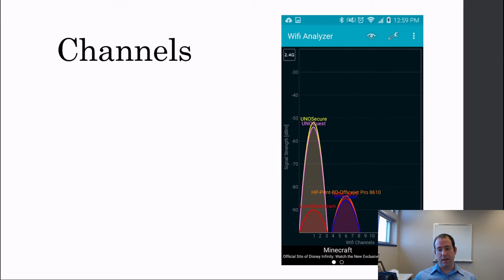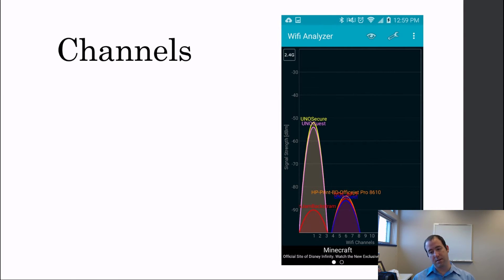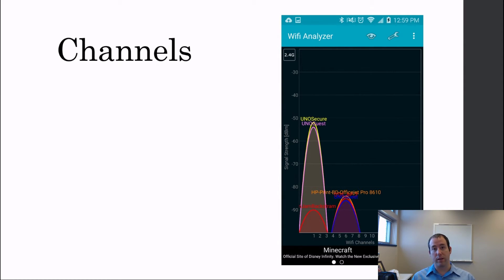Here's an example of a WiFi analyzer — Android has these available. Looking at a screenshot from my office, UNO Secure and UNO Guest are on channel 1, a few others are on channel 6, and nothing is on channel 11. You can pull out an analyzer and see which channel is most open or least congested in your area, and you probably want to have your radio on that channel.